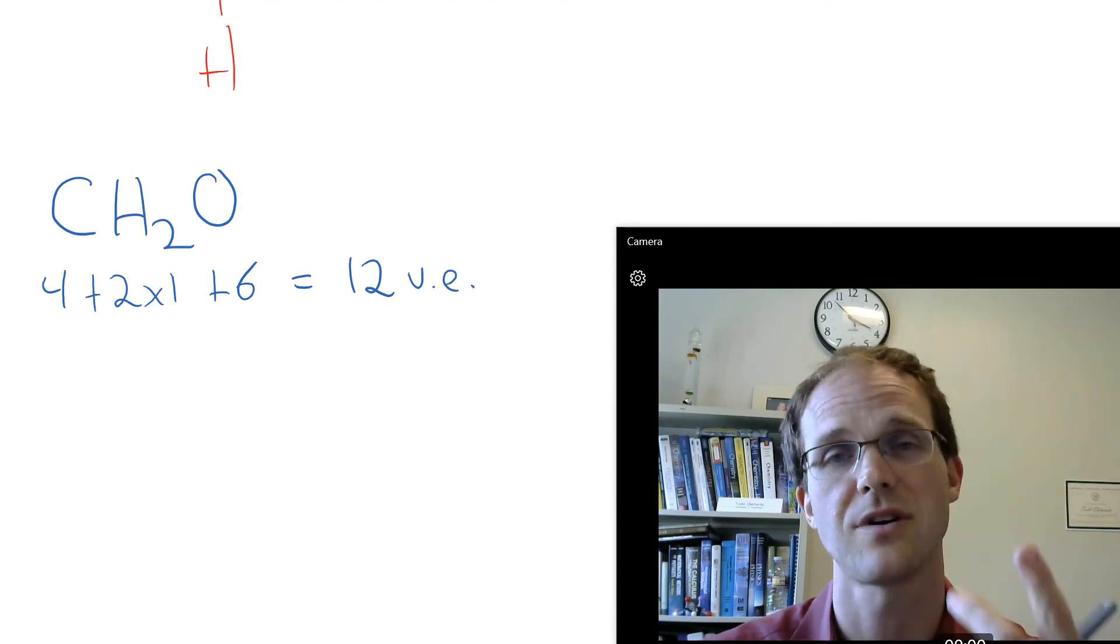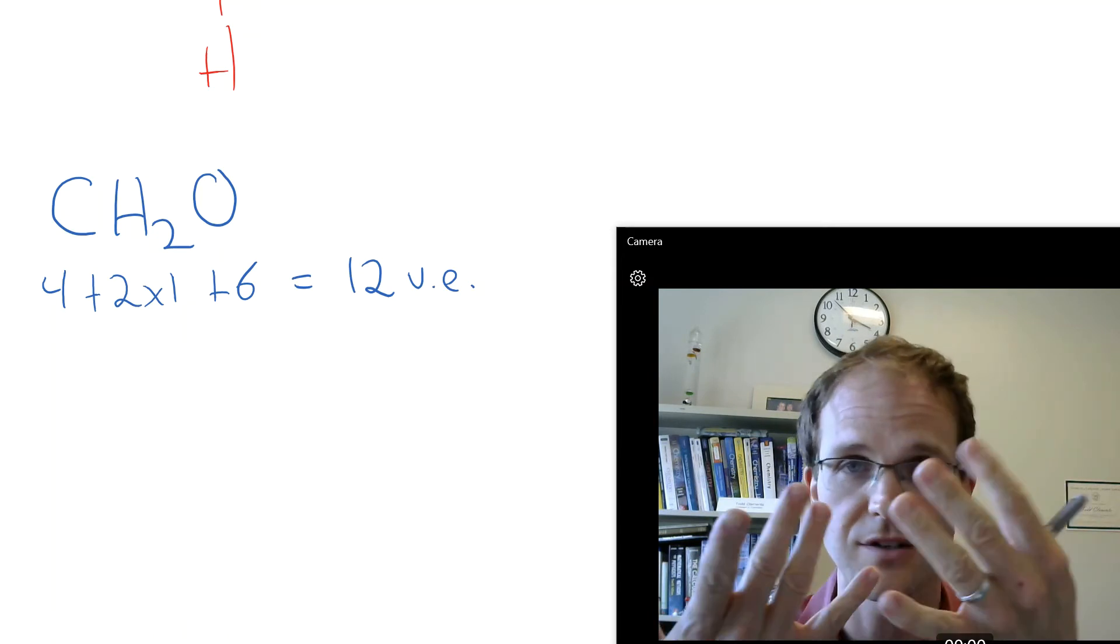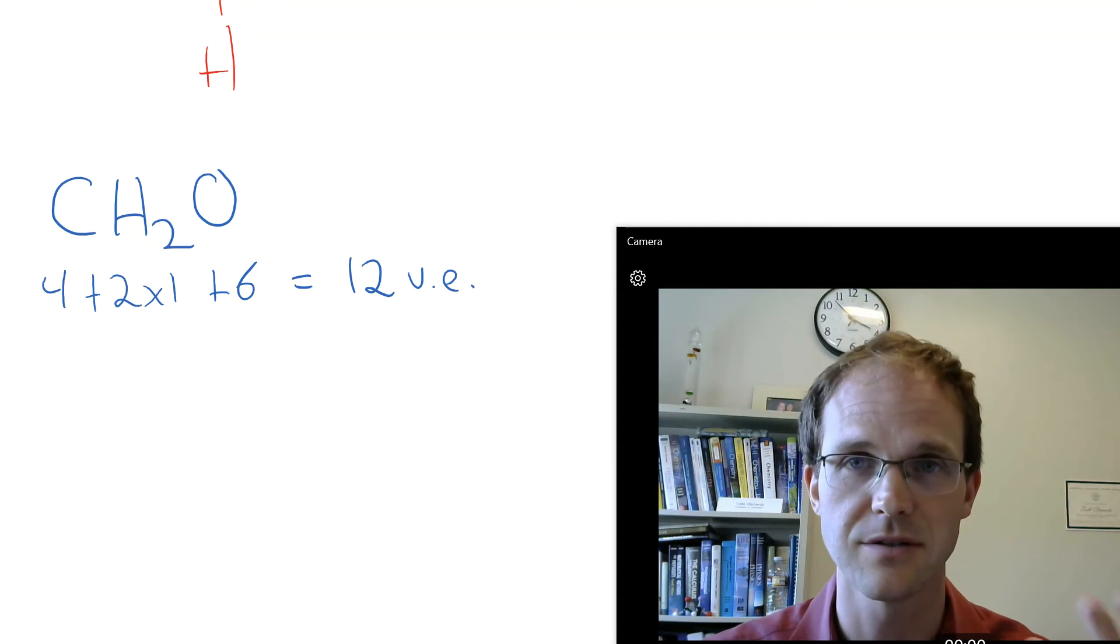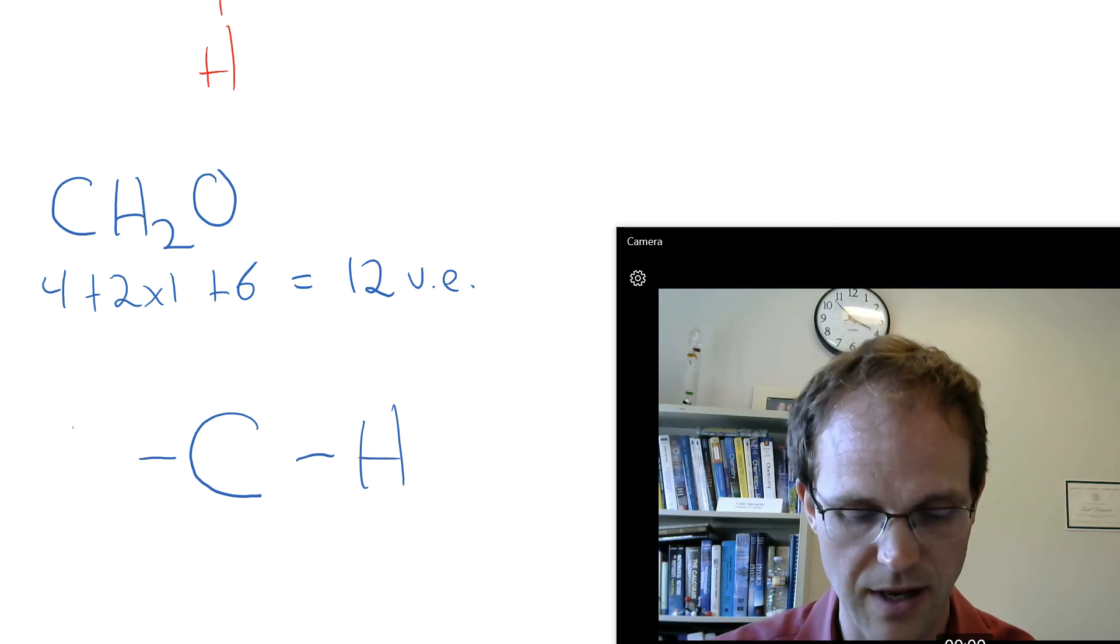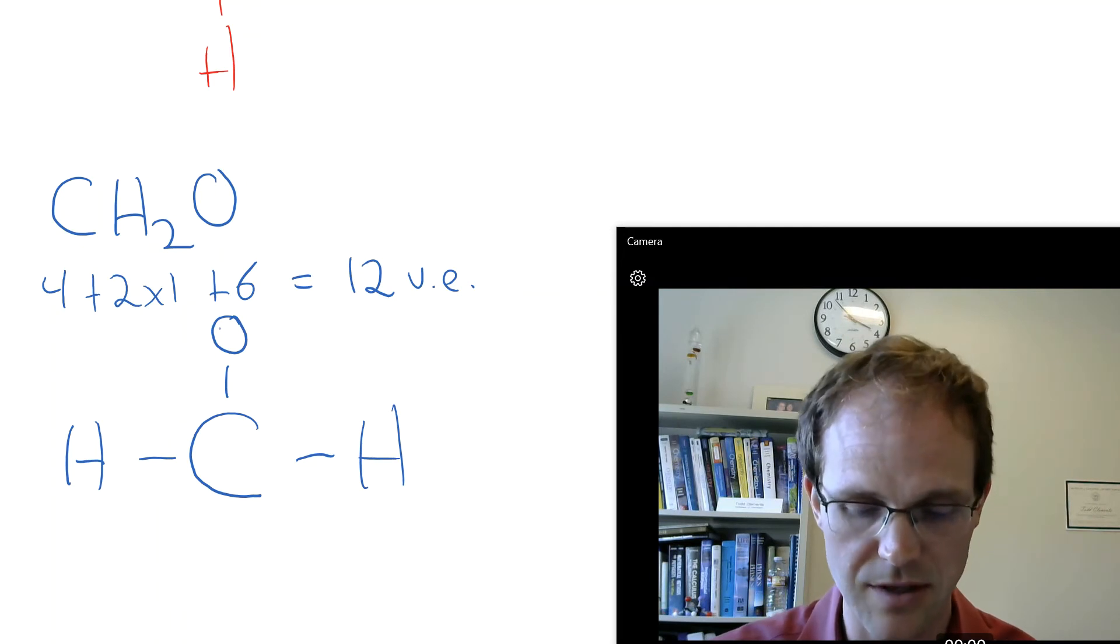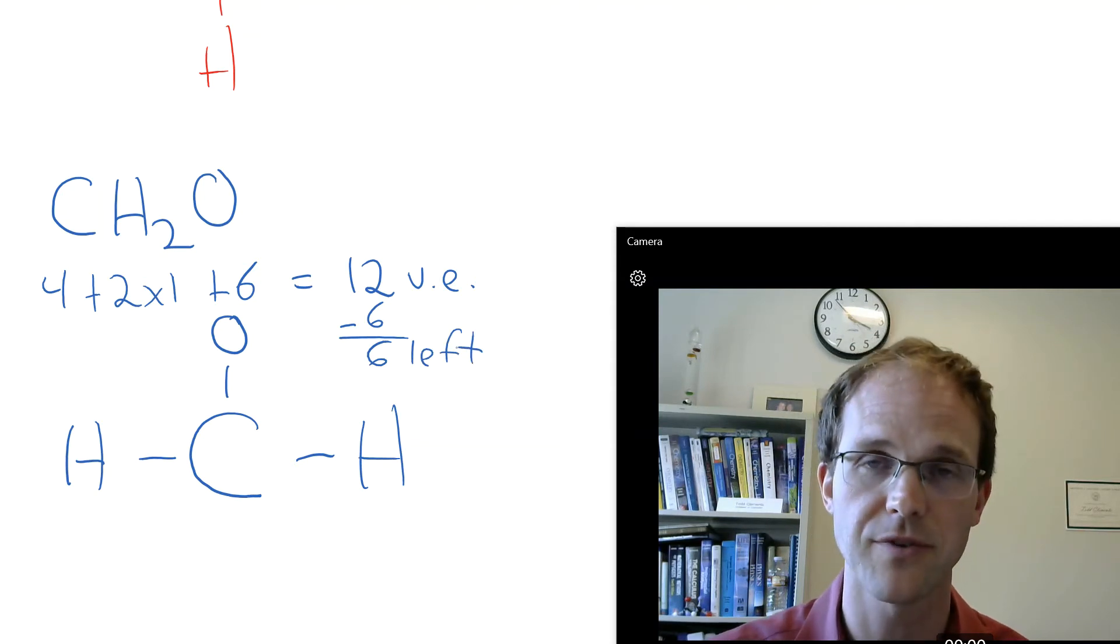Hydrogen, 1 valence electron, going to make 1 bond to be happy. Oxygen, 6 valence electrons, 2 bonds to be happy. Who's going to do the most? Carbon. So he's going to be our central atom. And then we're going to put everybody else around there. And again, it doesn't really matter where you put them. How many electrons did I use? I used 6, which means I have 6 left. And when I have 6 left, where are we going to put them first? Around the outside.